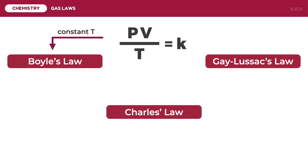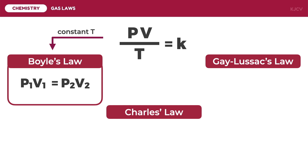In Boyle's law, temperature is kept constant. That's why it is written as the product of the initial pressure and initial volume is equal to the product of the final pressure and the final volume: P1 × V1 = P2 × V2.